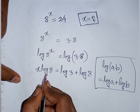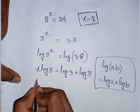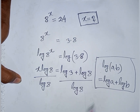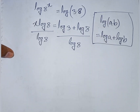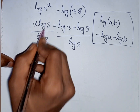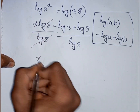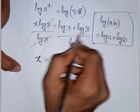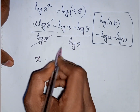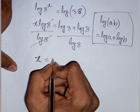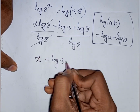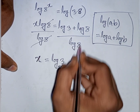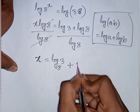We need the value of x, so divide both sides by log 8. The log 8 terms cancel, giving x equals log 3 over log 8 plus log 8 over log 8. That means x equals log base 8 of 3, plus 1.